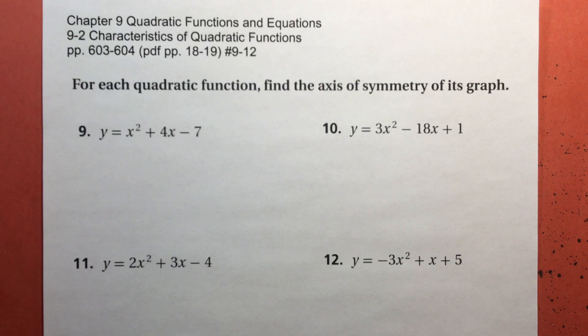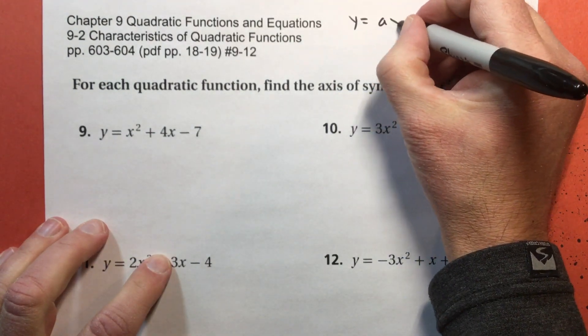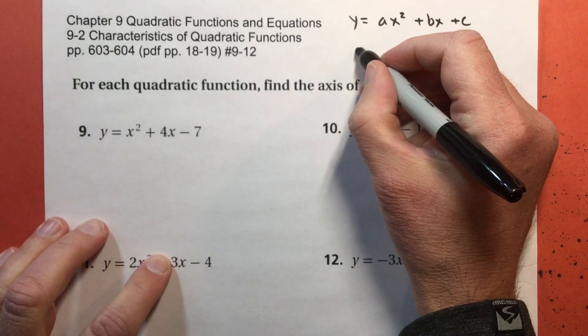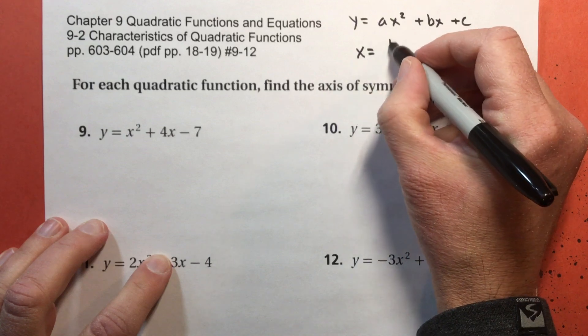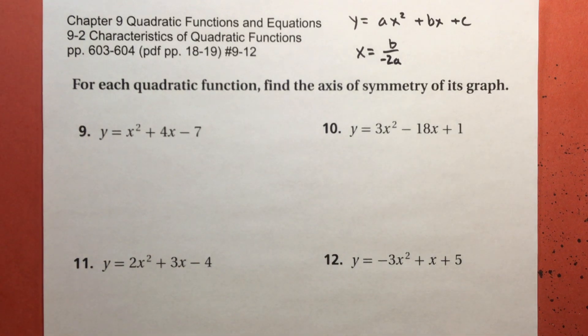In these problems, we're going to find the axis of symmetry from the expression that represents the function. So if you remember, if I write y equals ax squared plus bx plus c, then the axis of symmetry is x equals b divided by negative 2 times a. Always, always, always write the axis of symmetry x equals. It's not a number, it's a line, and lines have equations.